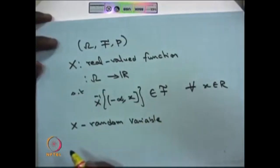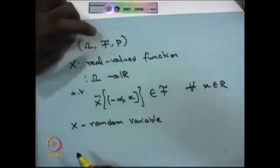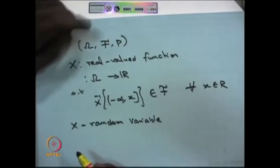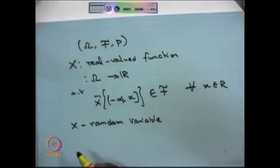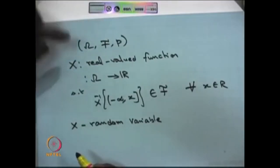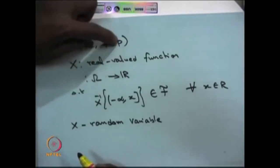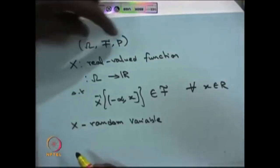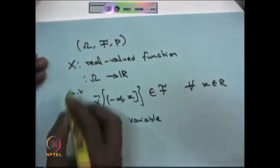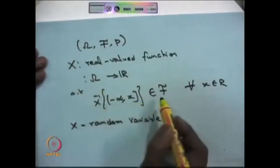After you have a collection of possible outcomes, you find one sigma algebra. You can make more than one sigma algebra over omega, but you fix one sigma algebra F — it could be the trivial one or a non-trivial one. After fixing F, you have a probability measure, and the probability measure has nothing to do with the random variable. You then define a real-valued function from the probability space such that the inverse image belongs to F.